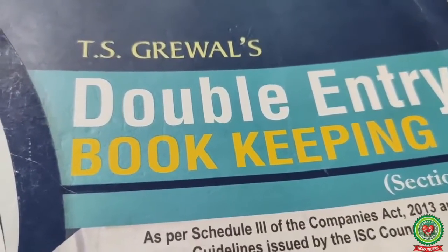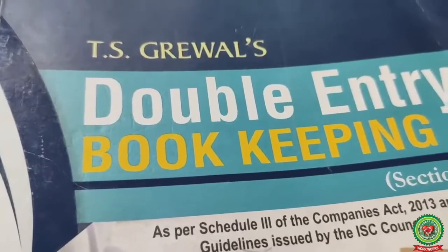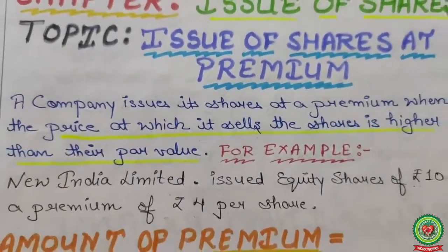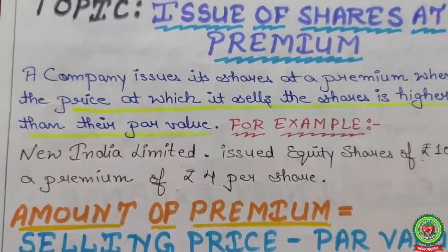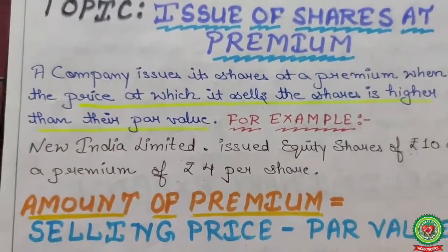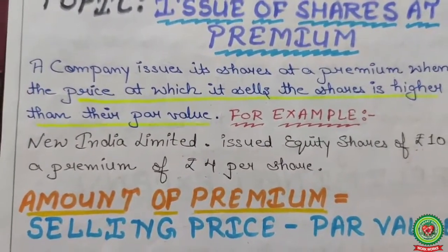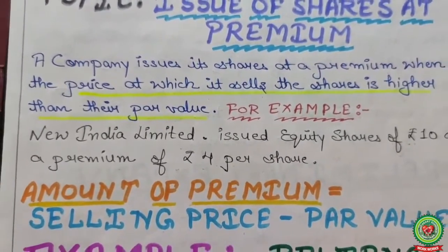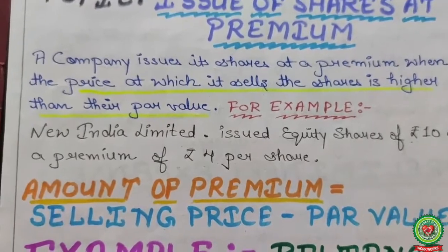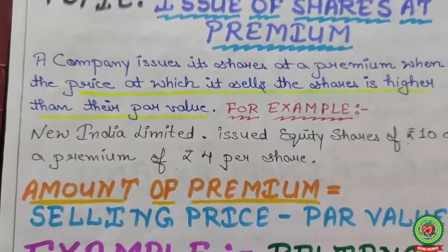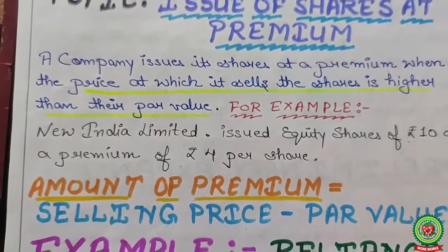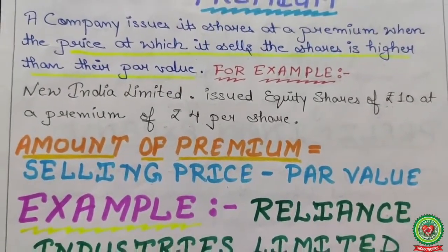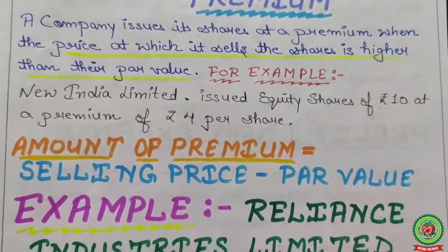For your revision, first of all see what is the provision again when issue of shares at a premium. What is premium? A company issues its shares at a price; when the price at which it sells the share is higher than the par value, that extra amount is called premium.